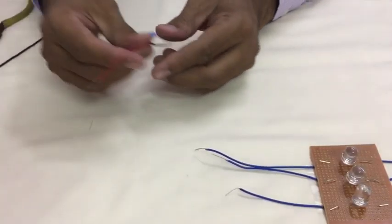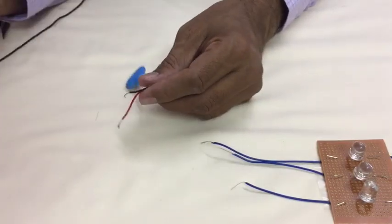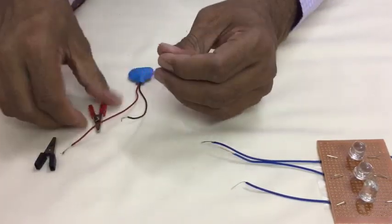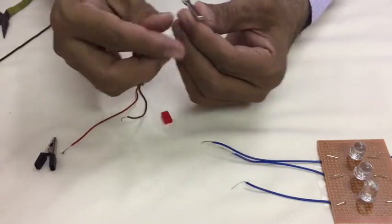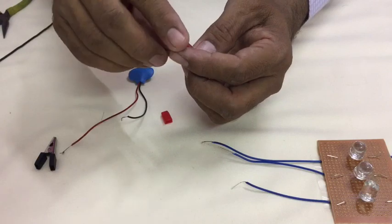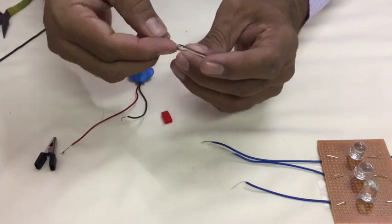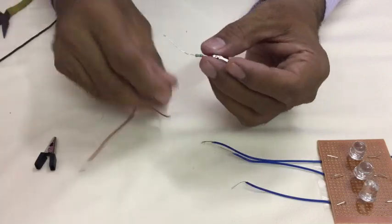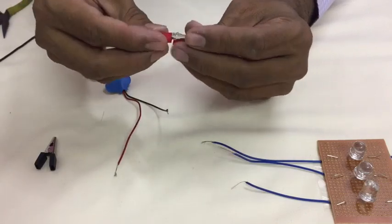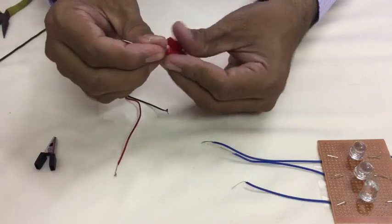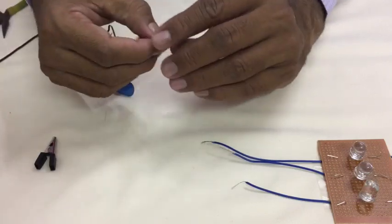Second part, take battery connector, crocodile clips and resistor. Take red pin, insert resistor wire in one pin hole and cap, cover it. To this resistor connect red wire.